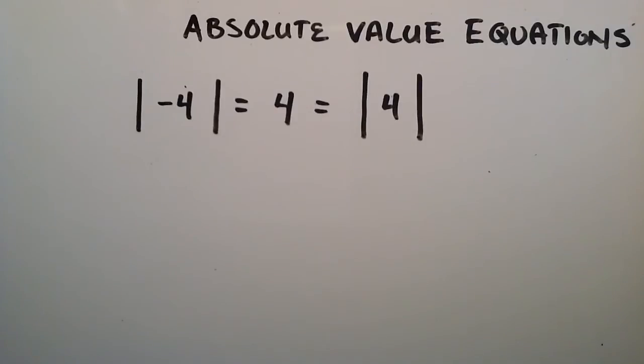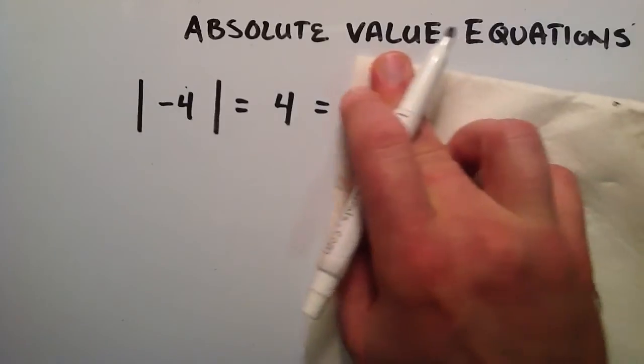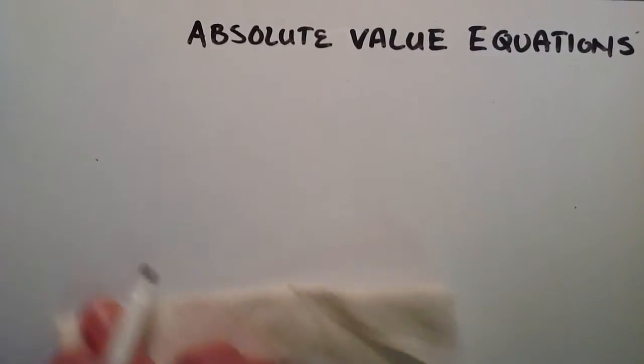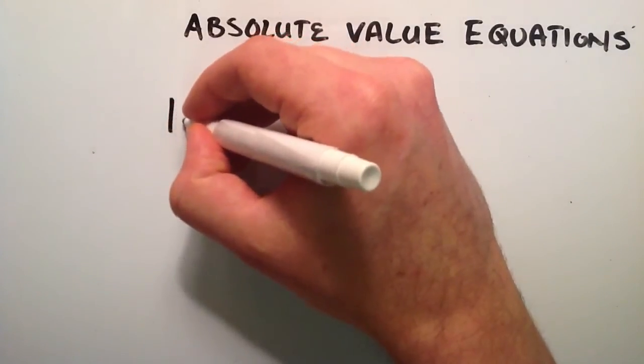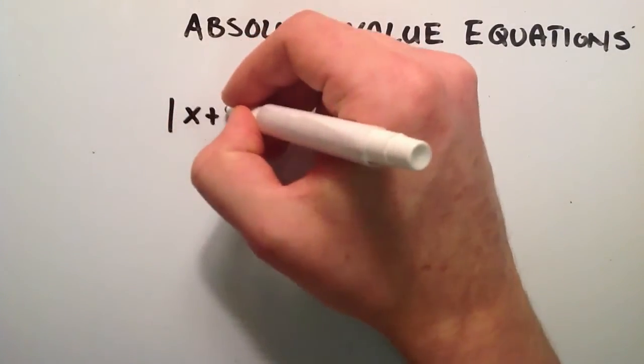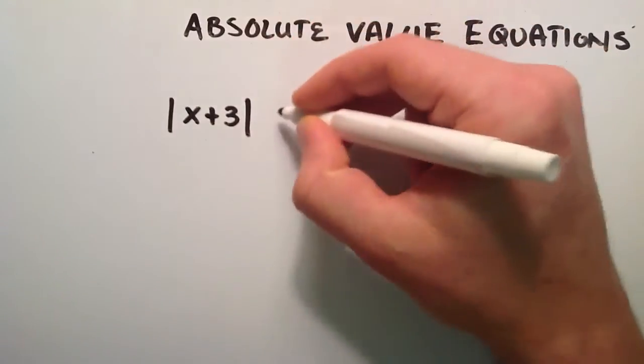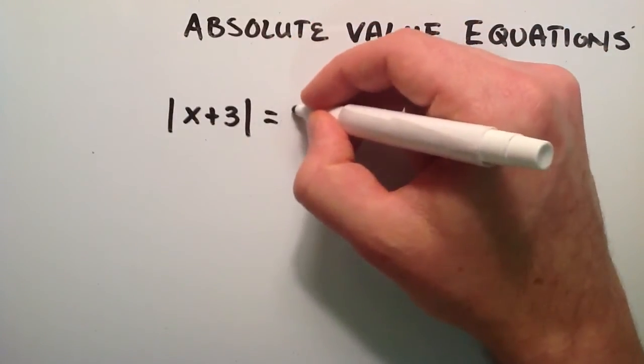Now that we've got the basic concept of an absolute value down, let's go ahead and solve an absolute value equation. So let's look at the absolute value equation: the absolute value of x plus three, and we're going to set that equal to 10.